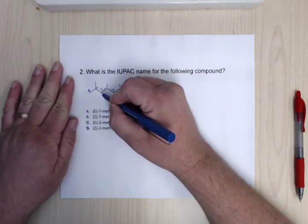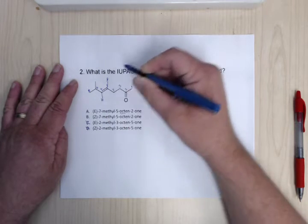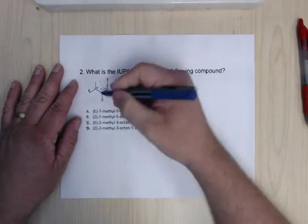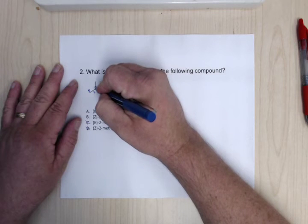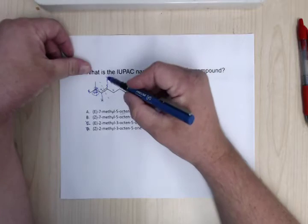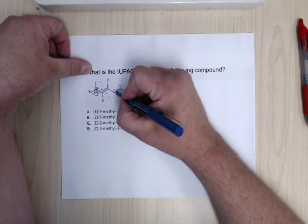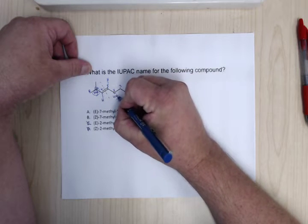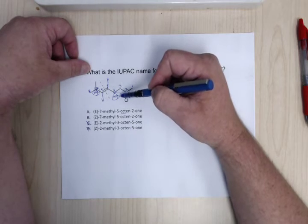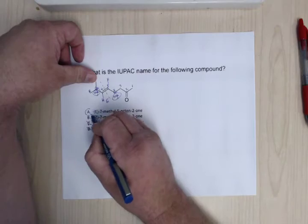To determine the E and Z for this compound, make sure you put in the hydrogens. On one side, you're looking at carbon versus oxygen — oxygen is heavier, so that's high. On the other side, it's hydrogen versus carbon — carbon is heavier, so the high is on the bottom. With the highs on opposite sides, this is E.